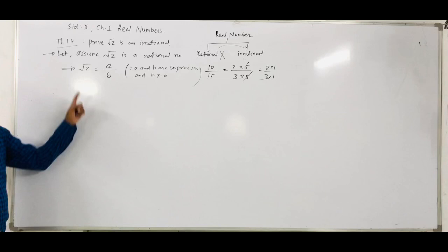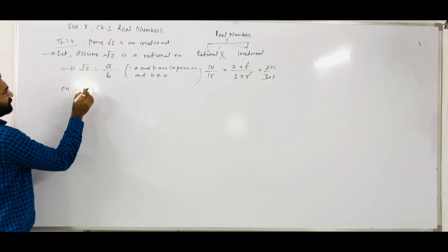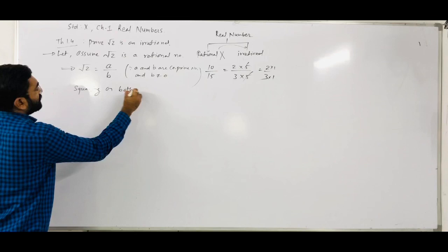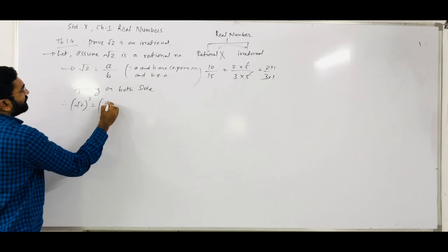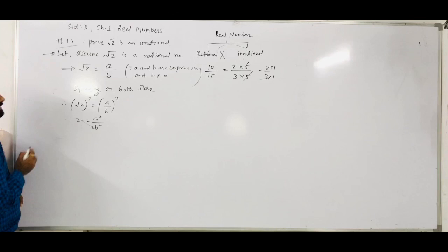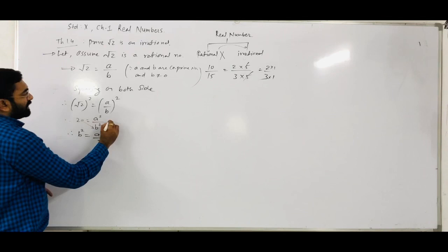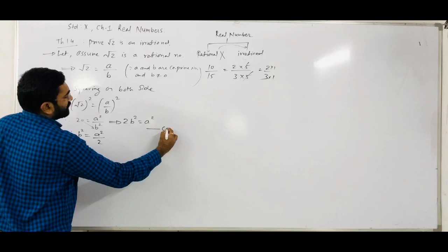We assume root 2 is a rational number, so root 2 equals a/b. Now taking squaring on both sides: root 2 squared equals a squared by b squared. So 2 equals a squared by b squared. That b squared comes to the left-hand side, so 2b squared equals a squared. We keep this as equation number 1.